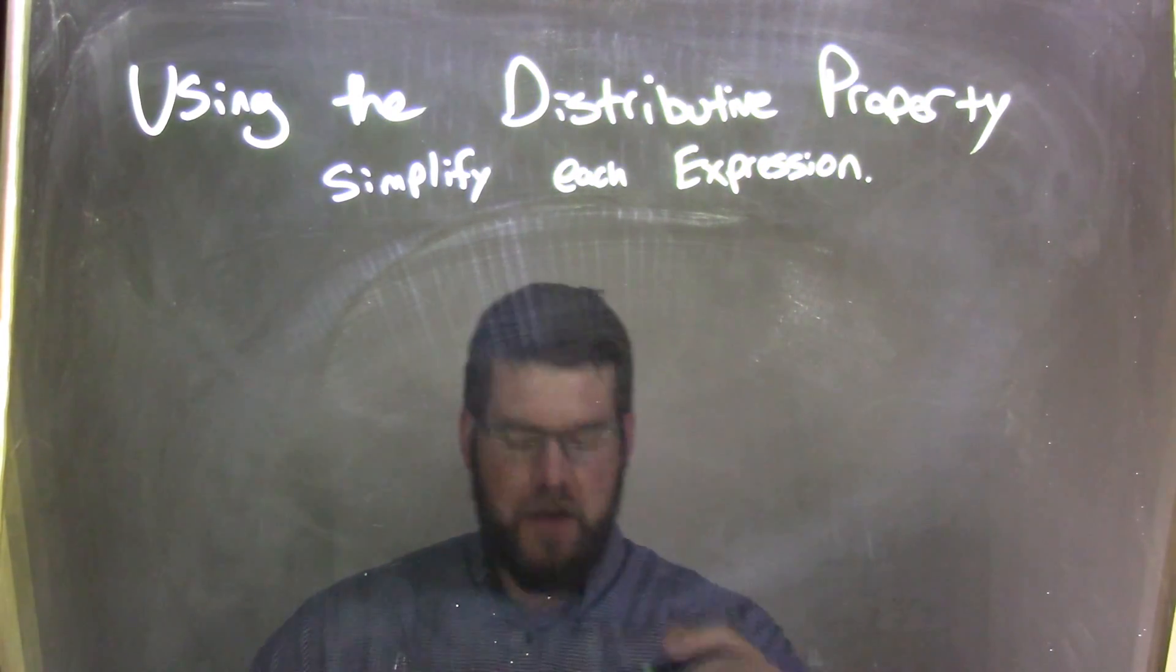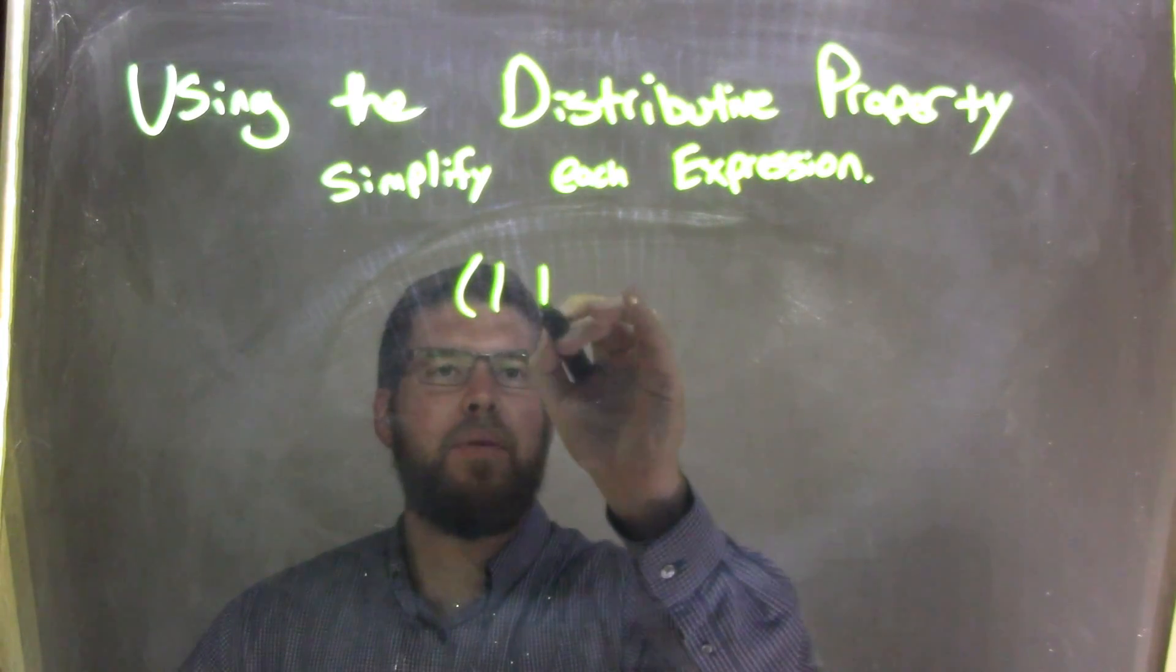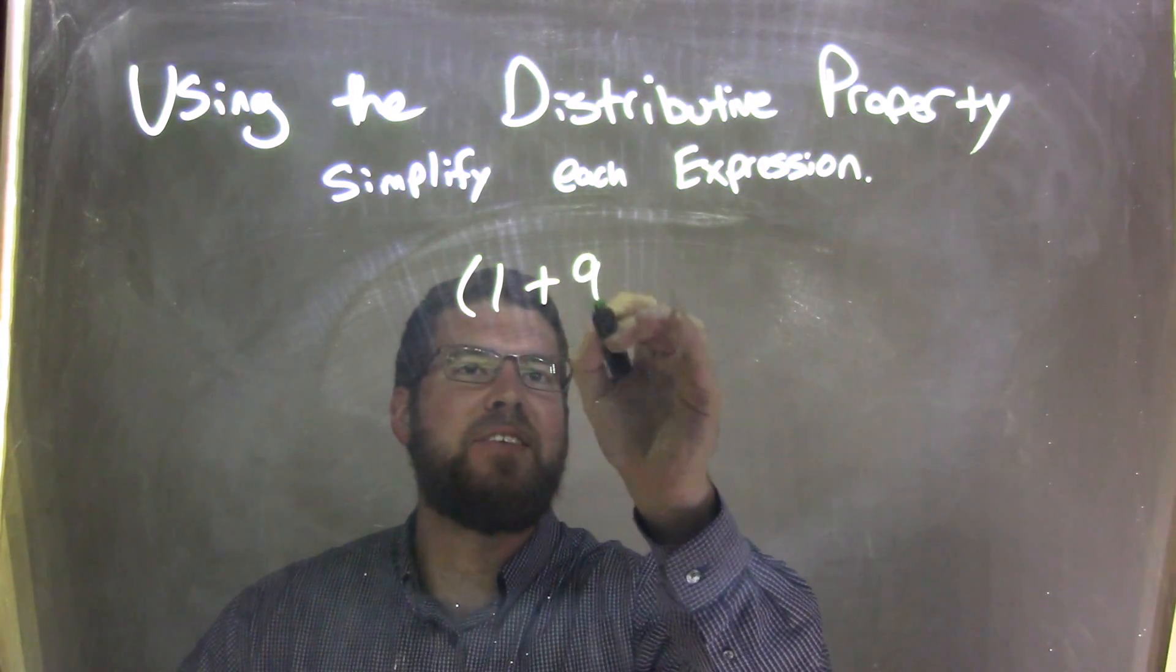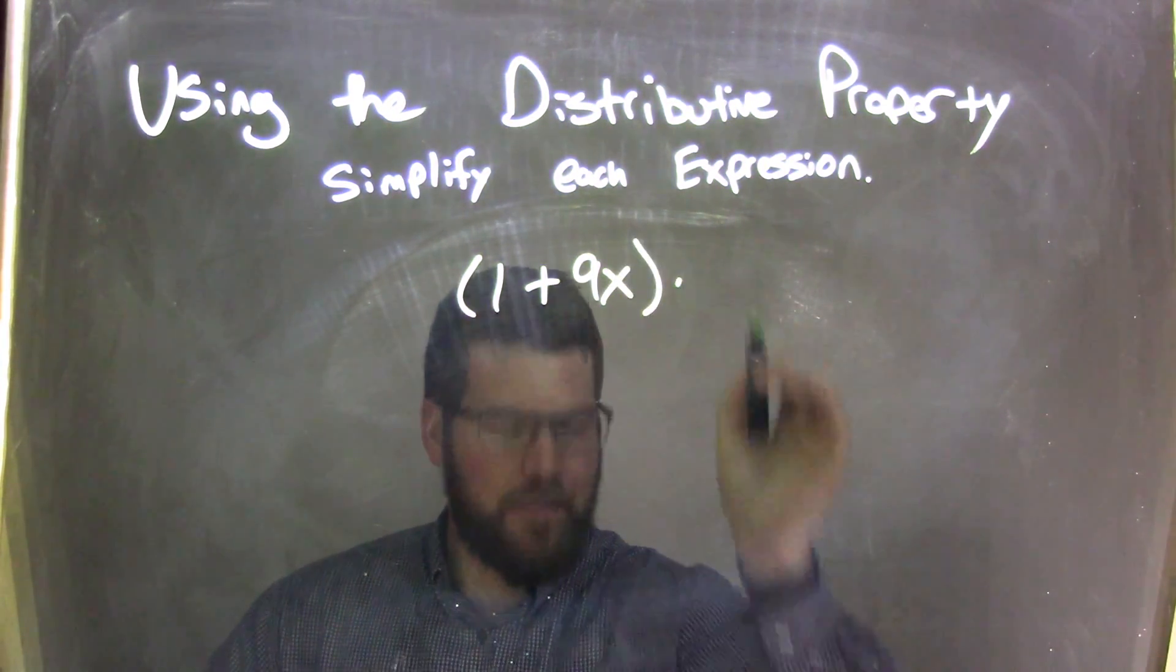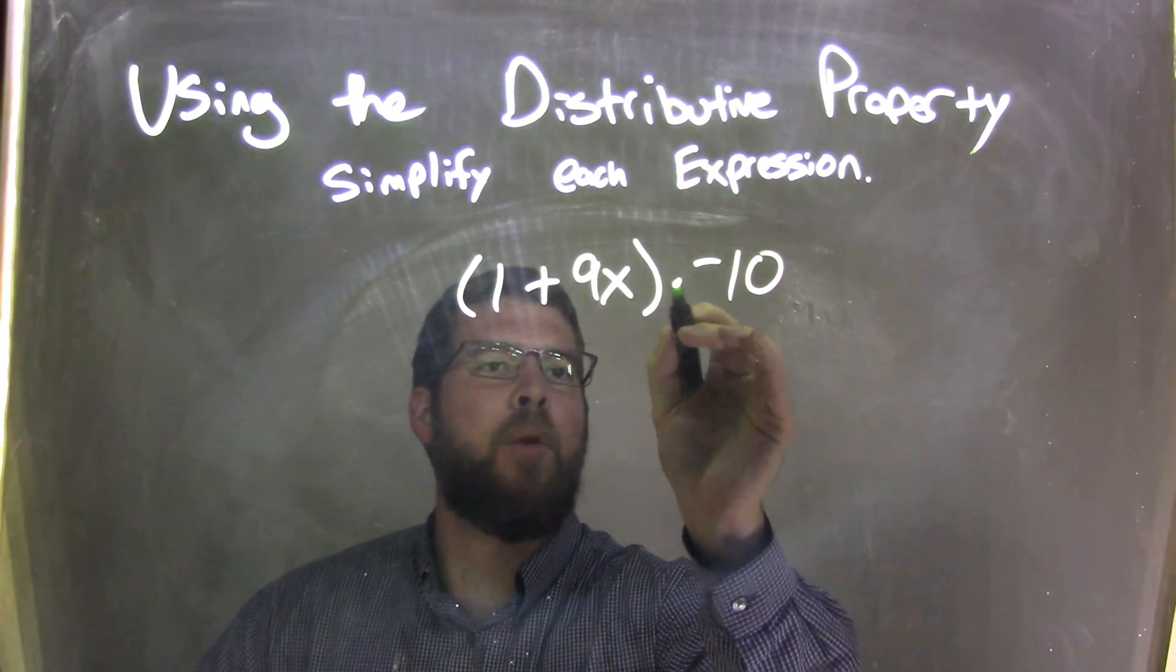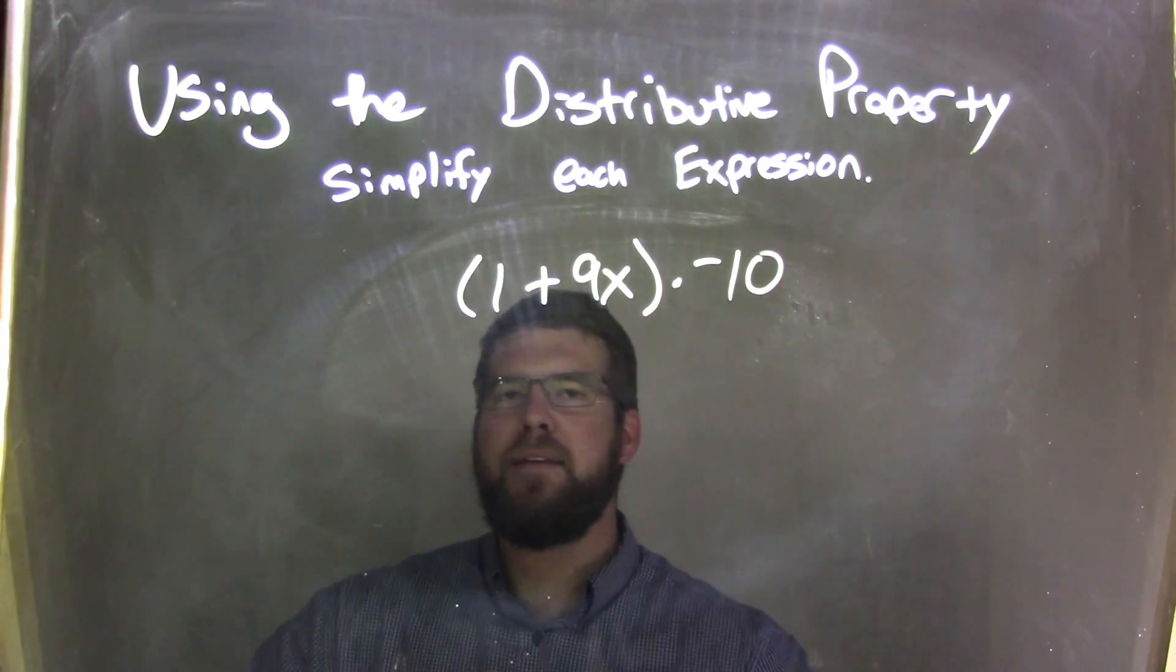So, if I was given this expression: 1 plus 9x times, on the outside, a negative 10. Be careful! Multiply it by a negative 10. We're not subtracting here.